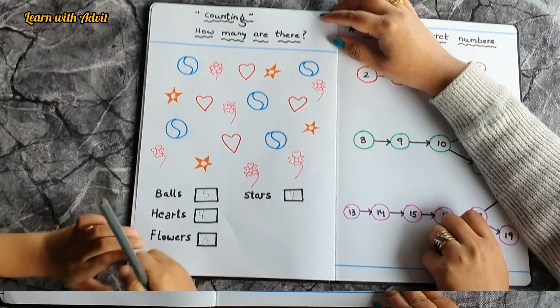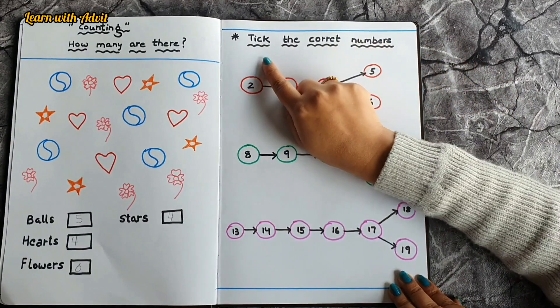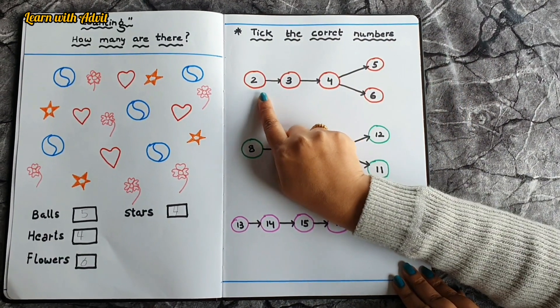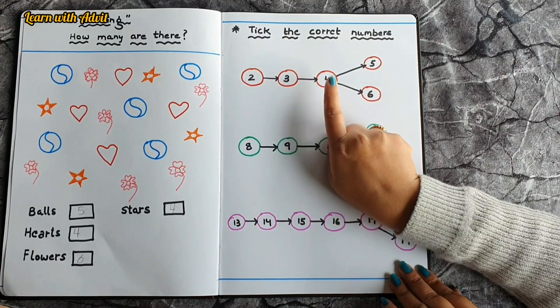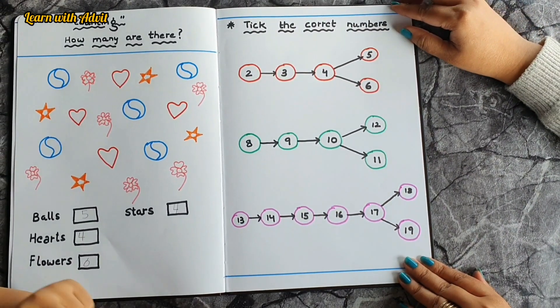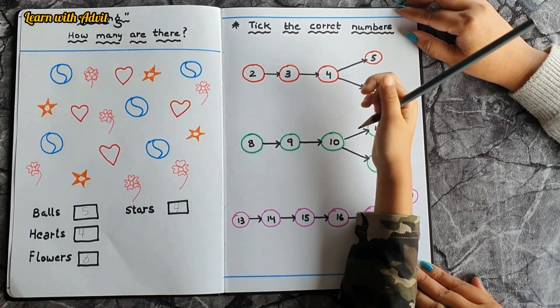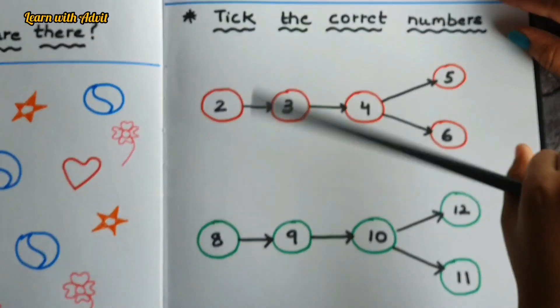Very good. In this sheet, what you have to do is take the correct number. You have to start counting from here, and which one is correct you have to take it. Come on, number starts from two, then...